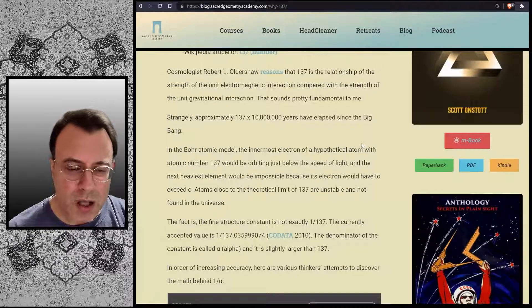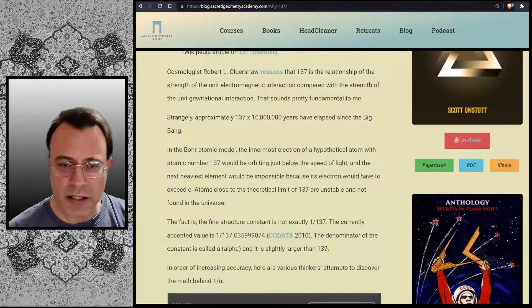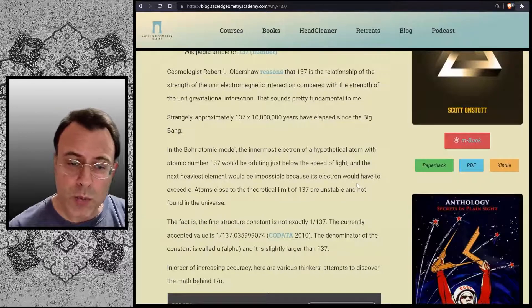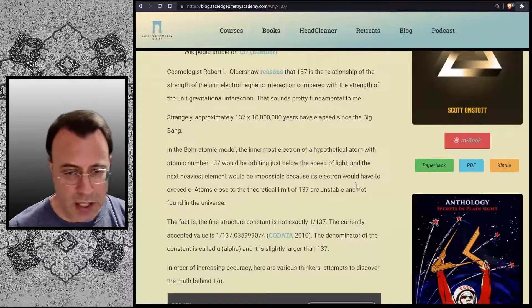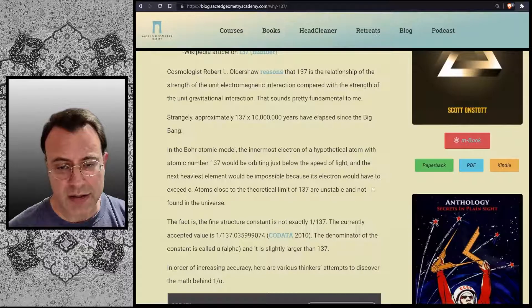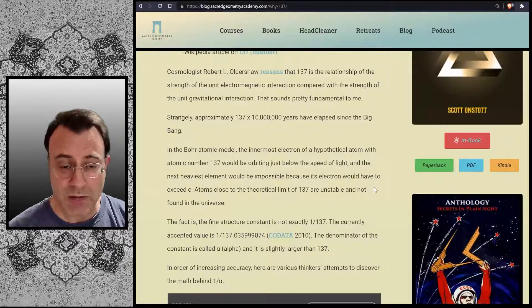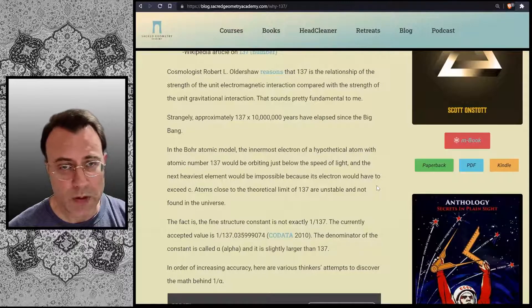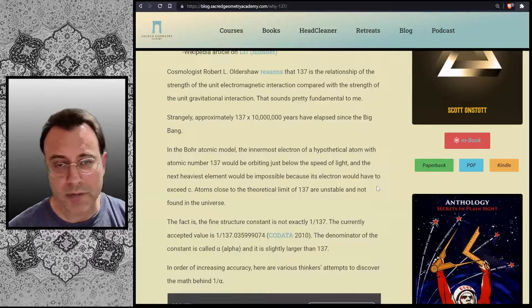In the Bohr atomic model, the innermost electron of a hypothetical atom with the atomic number 137 would be orbiting just below the speed of light, and the next heaviest element would be impossible, because its electron would have to exceed the speed of light. Atoms close to the theoretical limit of 137 are unstable and not found in the universe.